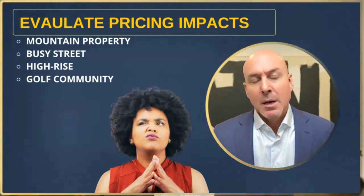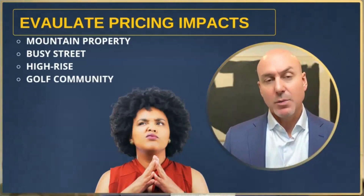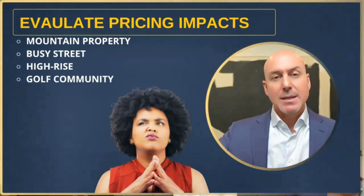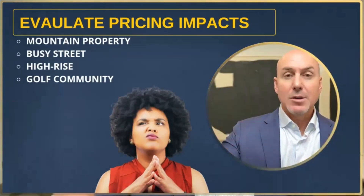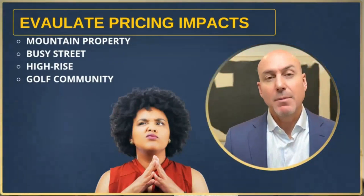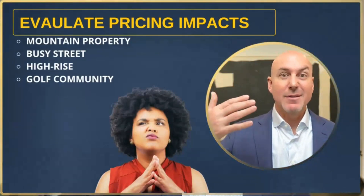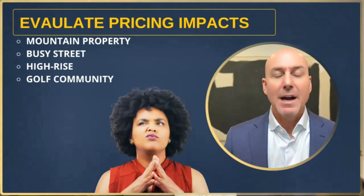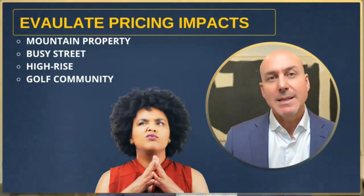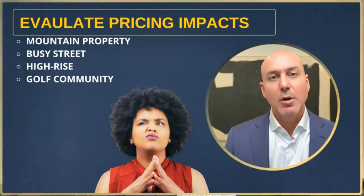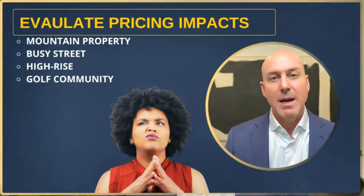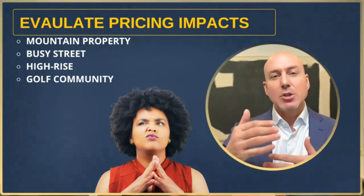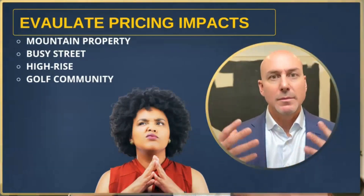For high-rises — here in Denver, the Four Seasons has a high-rise residence. The penthouse unit with western-facing mountain views sold for $10 million. The one with views of Aurora, Colorado — which is fine and pretty, but it's not the mountains — sold for $5 million. Same exact unit, $5 million price difference because one had a view of the mountains and the other had a view of a neighborhood.